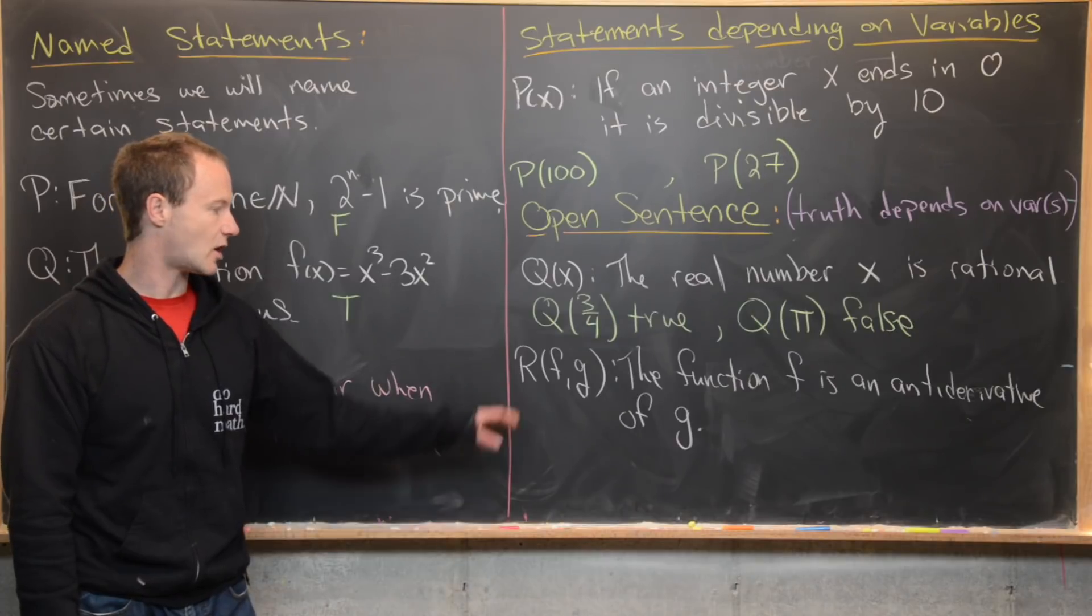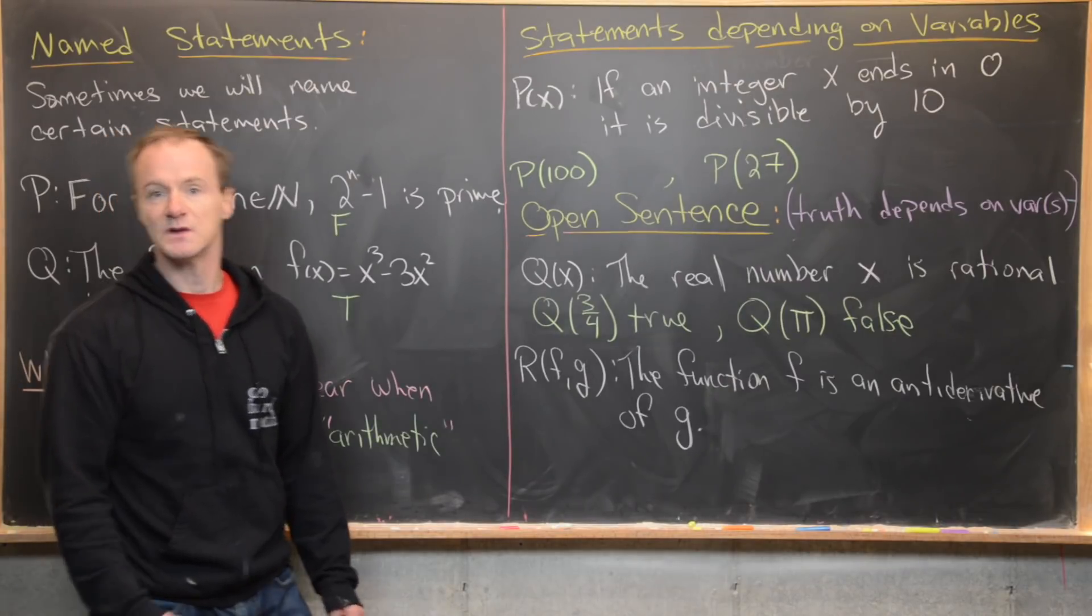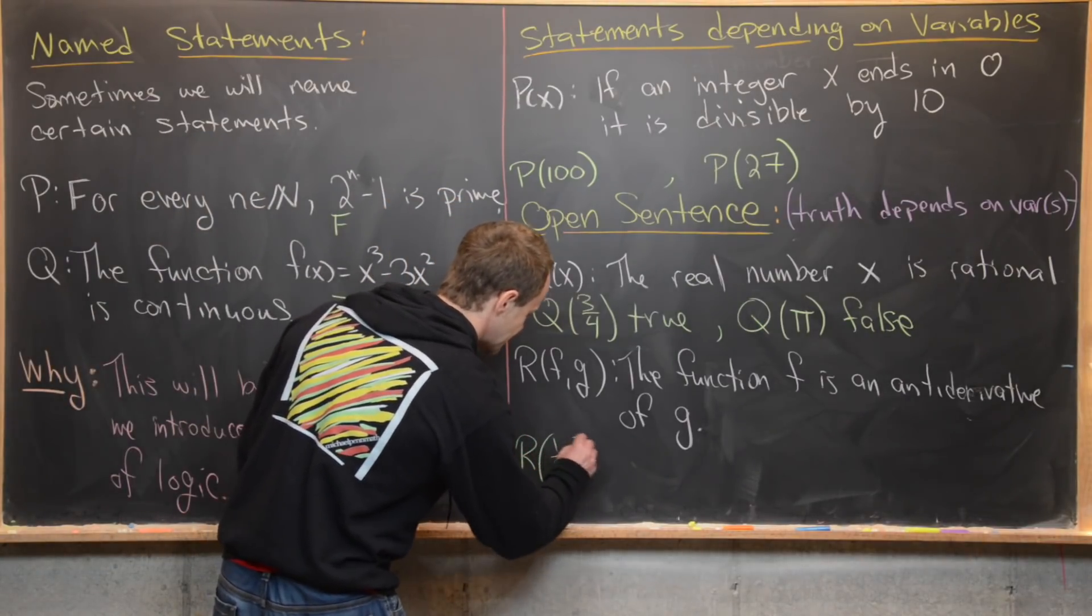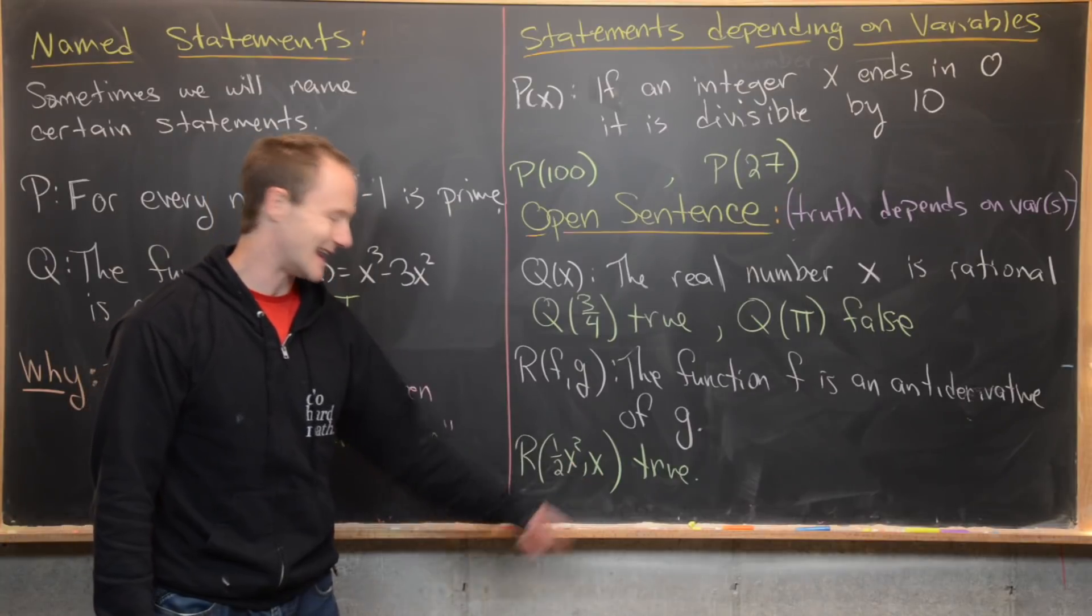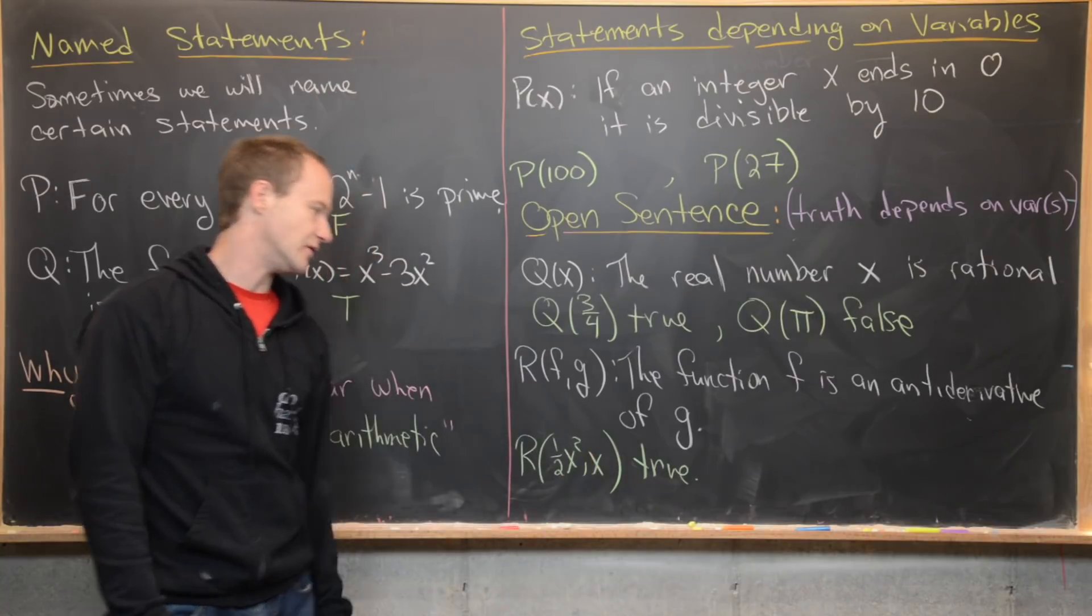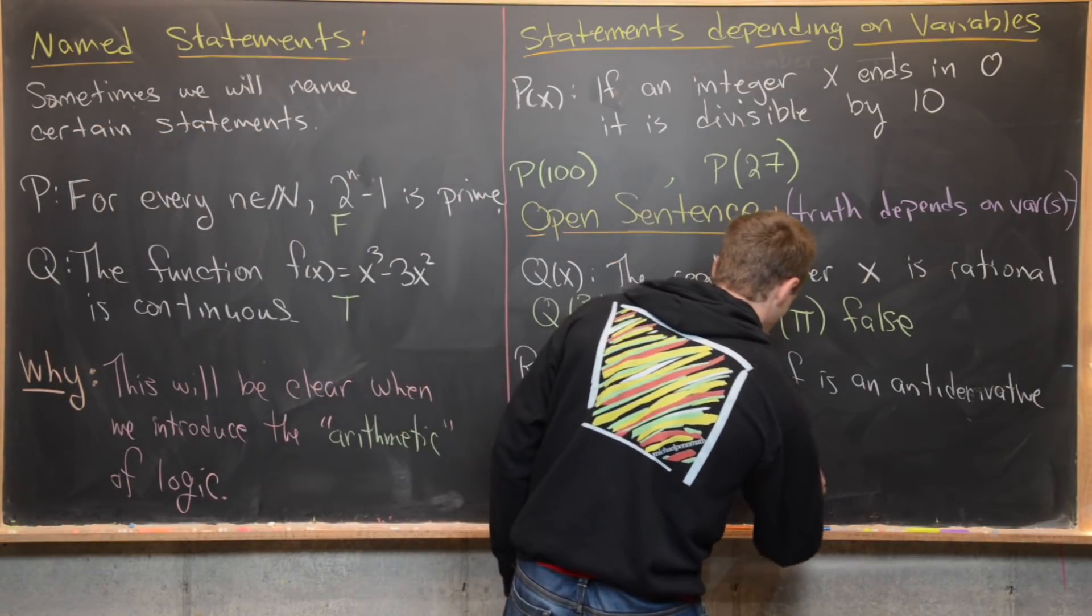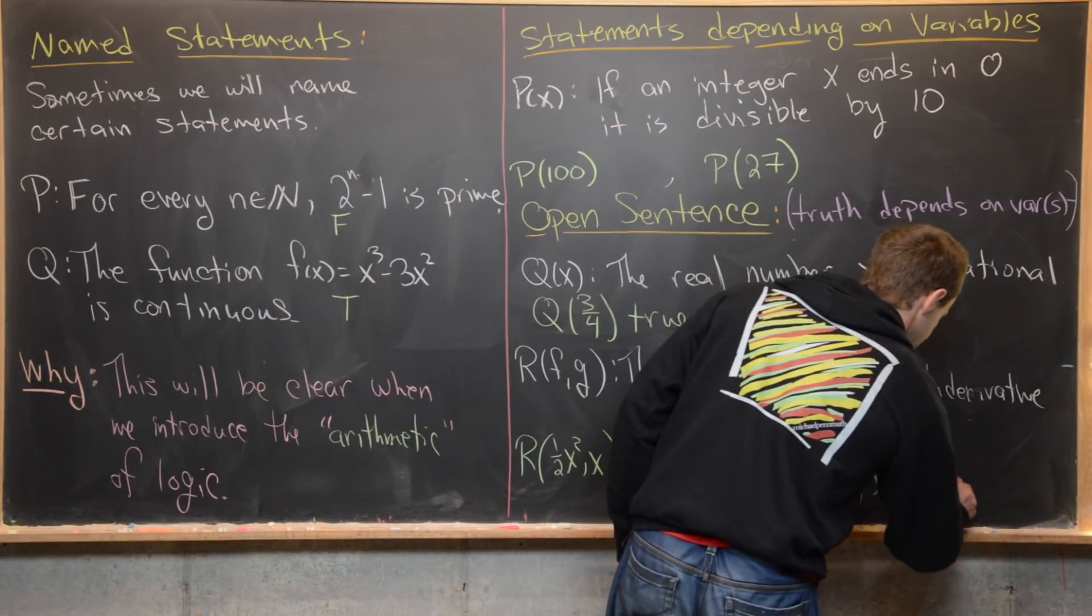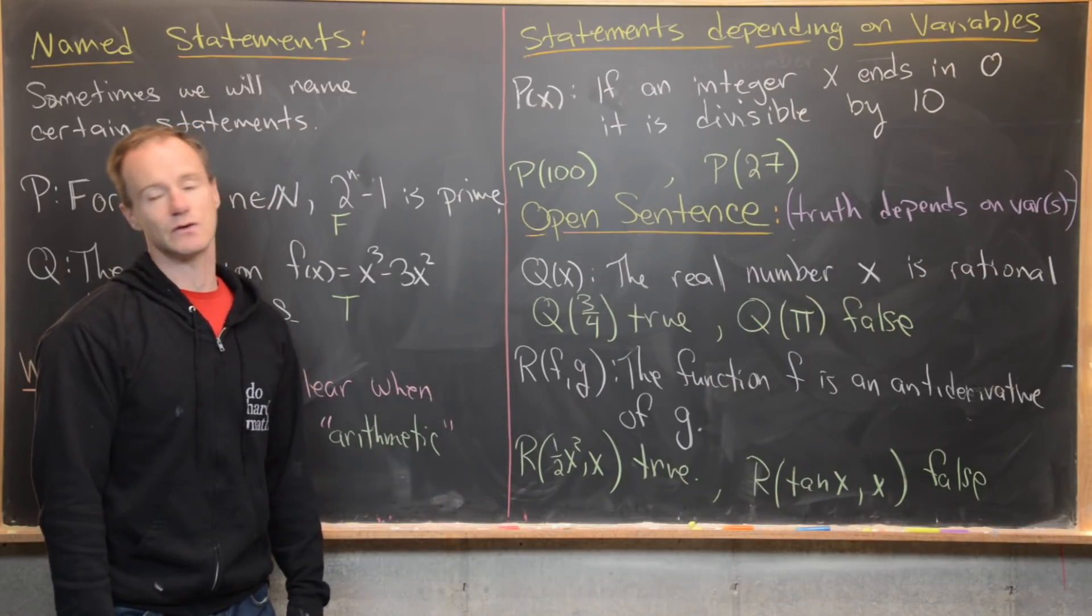Finally, we have this two variable open sentence R(f,g). It says the function f is an antiderivative of g. Let's look at an example where this is true and an example where it's false. If we look at R of one half x squared, x, this is going to be true because one half x squared is an antiderivative of x. One half x squared, if you take the derivative of that, you get x. That's by the derivative-antiderivative relationship. Now if we look at R of tangent x, x, we see that is false because tangent of x is not an antiderivative of x, or the derivative of tangent x is not equal to x.